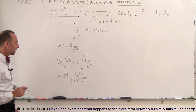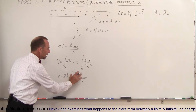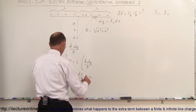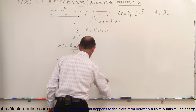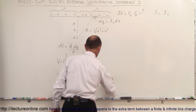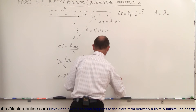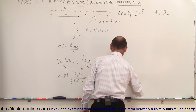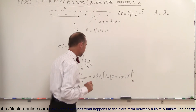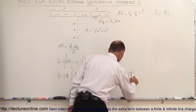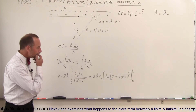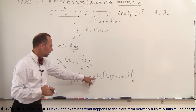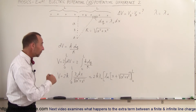Lambda is also constant, so we factor it out. The integral of dx over sqrt(A² + x²) evaluates to the natural log of (x + sqrt(A² + x²)), evaluated from 0 to L. We also substitute K = 1 over 4π epsilon sub-naught, which most texts prefer.